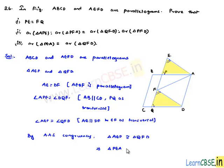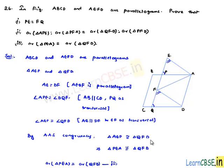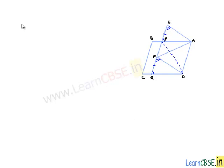This can also be written as triangle PEA is congruent to triangle QFD. We know that when two triangles are congruent, their corresponding sides are equal. Therefore, area of triangle PEA is equal to area of triangle QFD — this is the third proof. From this we can also say PE is equal to the corresponding side FQ — this is our first proof.